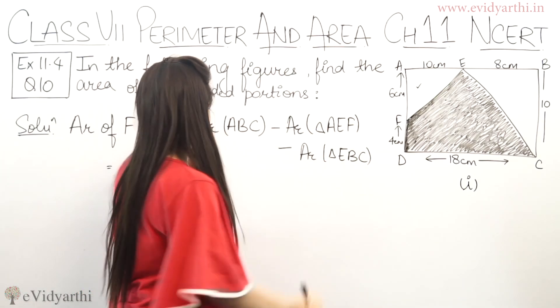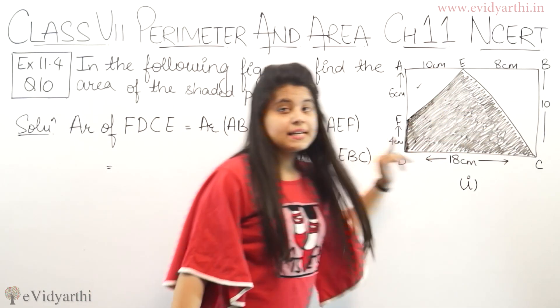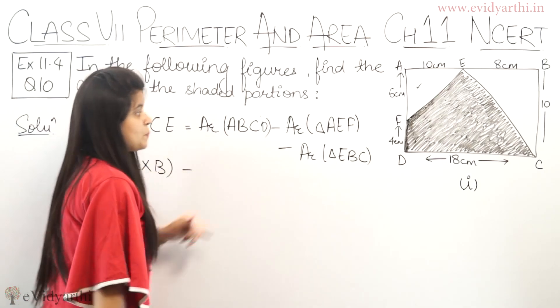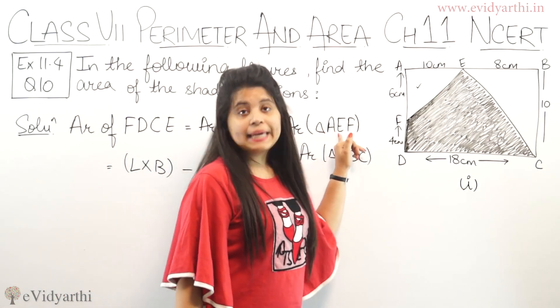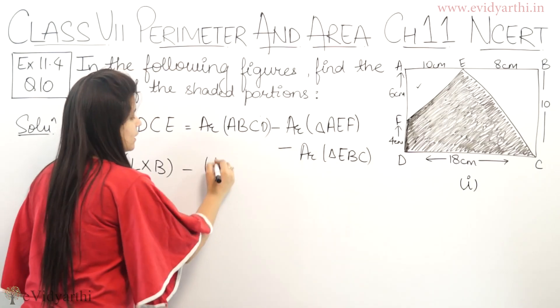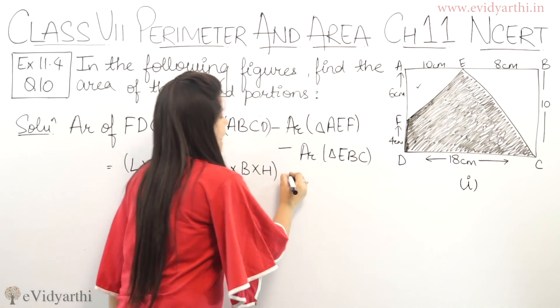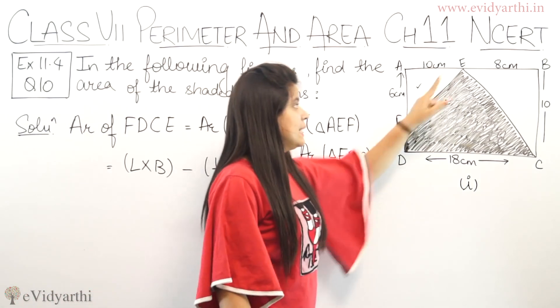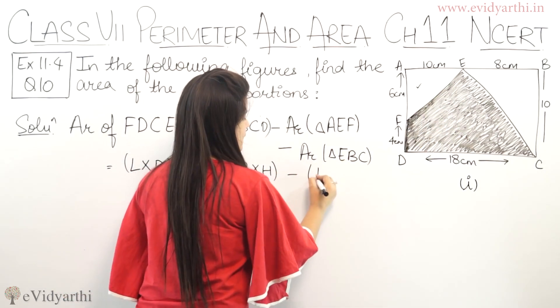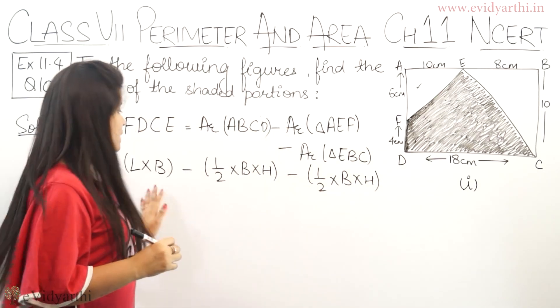Now let's write the formulas. Area of rectangle ABCD is length into breadth. Area of triangle AEF is half base into height. Area of triangle EBC is also half base into height.